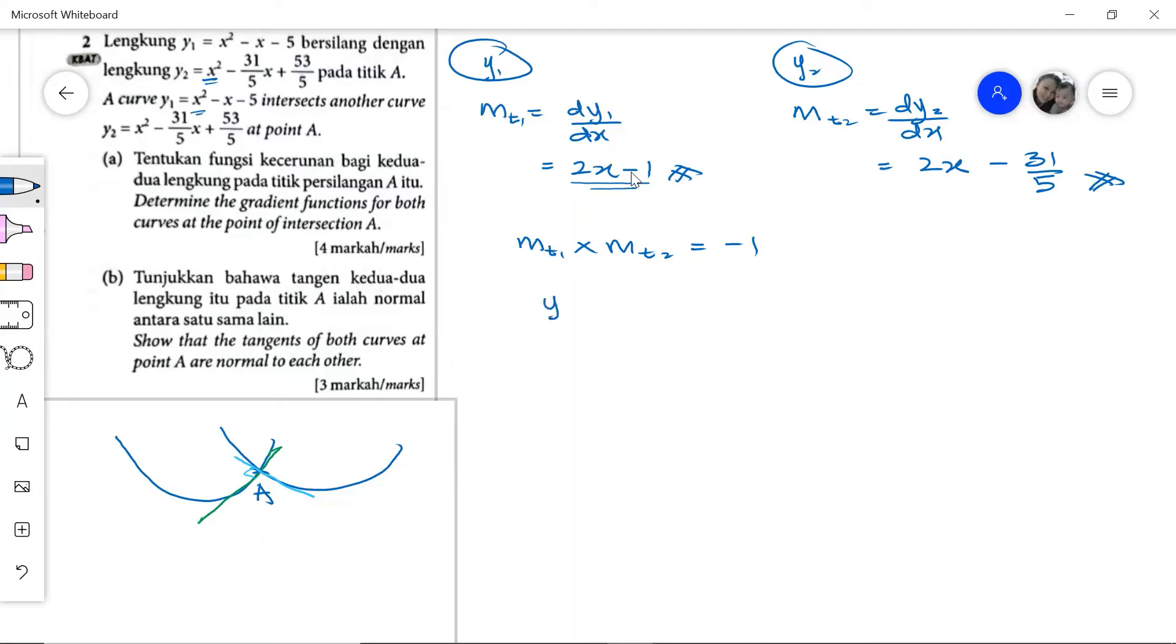At point A, y1 equals y2. So we take x squared minus x minus 5 equals x squared minus 31 over 5x plus 53 over 5. Both x squared terms cancel. After bringing terms to each side, we have 31 over 5x minus x equals 53 over 5 plus 5.